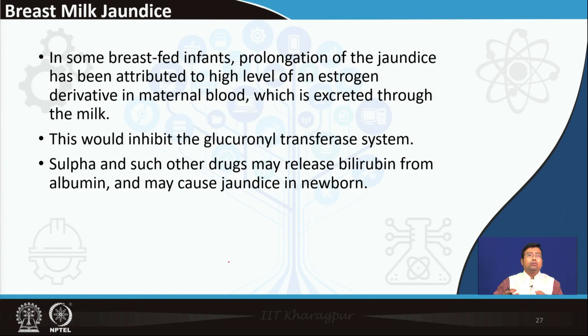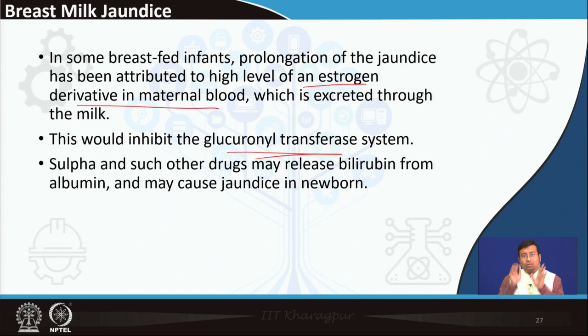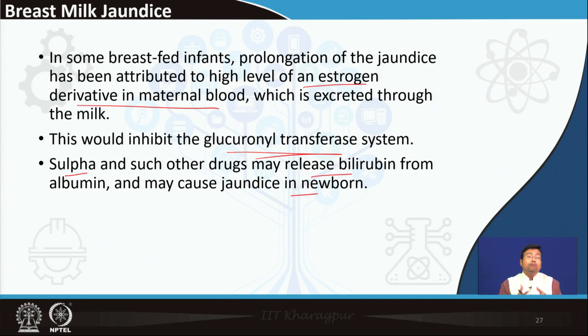Breast milk jaundice is a physiological jaundice that is prolonged. Why? Because there is a high level of estrogen derivatives in maternal blood that are excreted through milk — in babies feeding only on mother's milk. This estrogen metabolite has been found to inhibit the UDP glucuronosyl transferase system. This is acquired — the effect is not present in the baby itself but is coming from the mother. Also, some drugs like sulfa drugs dissociate the bilirubin-albumin conjugate, which may also cause disease in the newborn. All of these are reasons of acquired hyperbilirubinemia in babies.